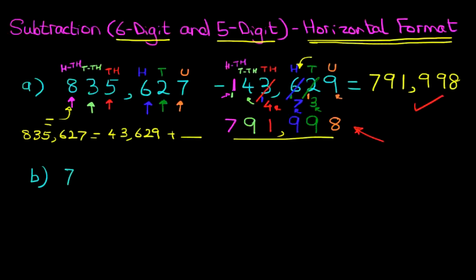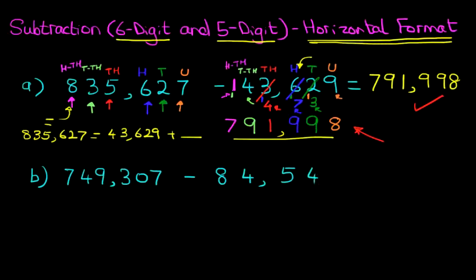Onto our second example. We have 749,307 minus 84,542. Now the same principles apply. We're going to start with the units. How many have we got? We've got 2 units. Our target is to get to 7. So what number added to the 2 is going to give us 7? The answer is 5. That was nice and easy.